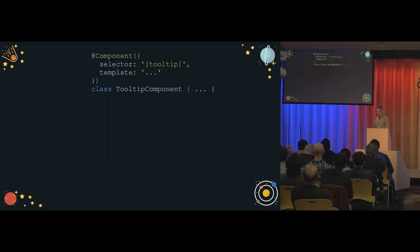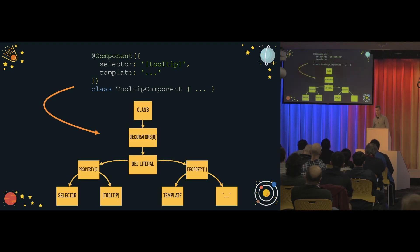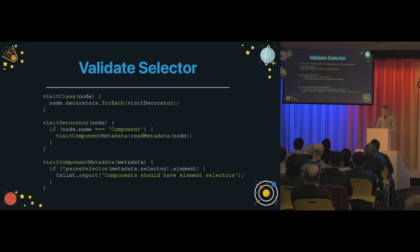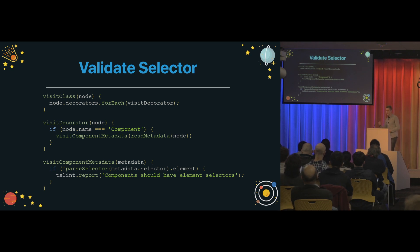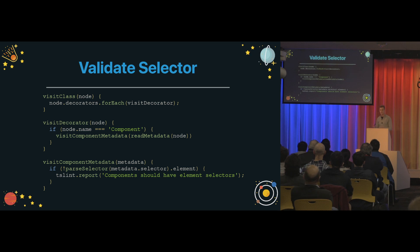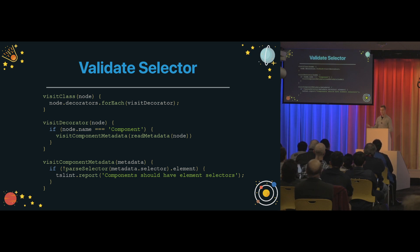Here is some simple code for the rule implementation. First, in order to verify whether the selector is type element, we need to visit the class which contains the implementation of the component. After that, we need to visit all of its decorators. If one of the decorators is called component, we want to perform some validation over the metadata declared in that component decorator. If the selector is not of type element, we report a warning.